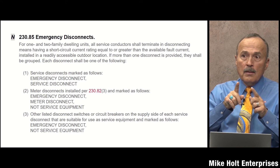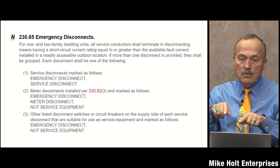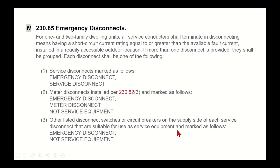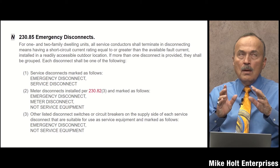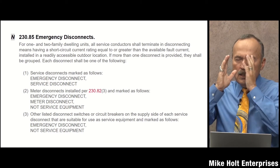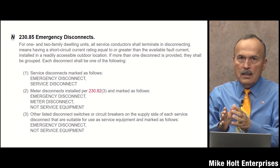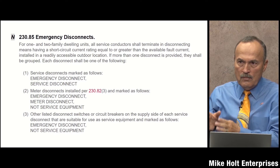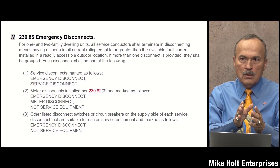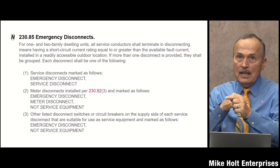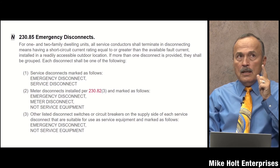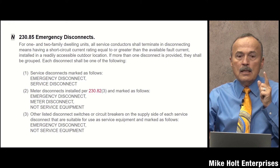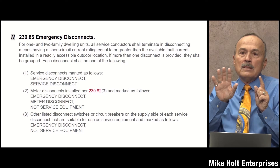That option doesn't require a short-circuit withstand rating — number three didn't say anything about withstand current rating. You can put a listed disconnect, which could be a circuit breaker, on the supply side of each service disconnecting means that's suitable for use as service equipment. So you can get a service-rated disconnect, put it on the supply side of the service disconnect, after the meter — a service-disconnect disconnect.